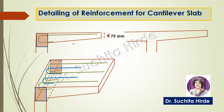In a cantilever slab, tension is at the top and compression is at the bottom because there is a hogging bending moment. Therefore, main reinforcement is required at the top surface of the slab. Since this reinforcement is in tension, there is a possibility of slipping from the support, and therefore all the reinforcing bars are anchored into the support — this is called an anchored bar or 'chimta'.